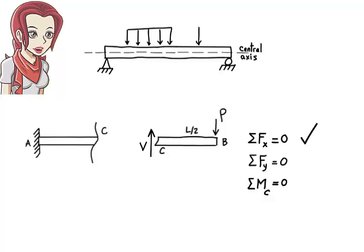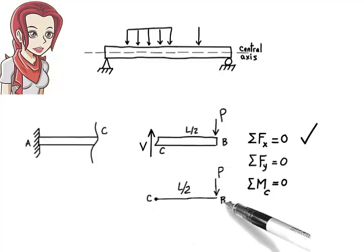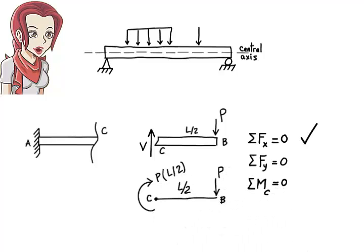To satisfy the third equilibrium equation, it is important to recognise that P creates a bending moment about point C. The moment has a magnitude of P times L over 2 and a clockwise direction. For the sum of the bending moments to be zero, there must be a bending moment present at C. The magnitude of this moment must be equal to the magnitude of the moment that P creates about C. The two moments, however, must act in opposite directions in order for their sum to be zero.